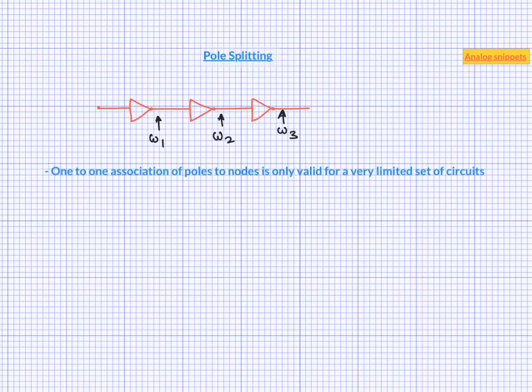It is valid for example when nodes are isolated by unidirectional ideal voltage buffer. But if these nodes are interacting for example through capacitors or if we remove the ideal buffer, then we cannot attach a given pole to any one node.